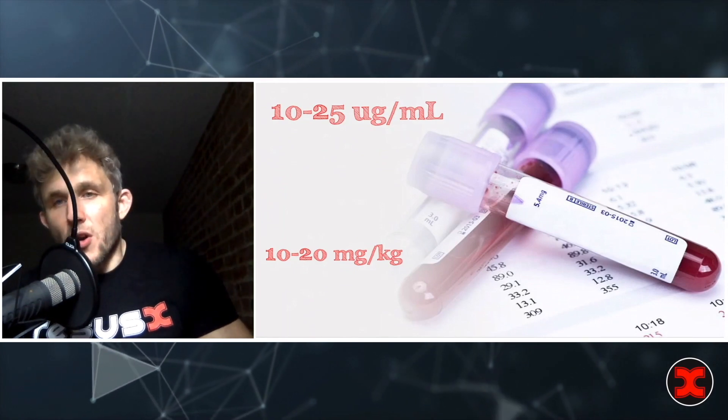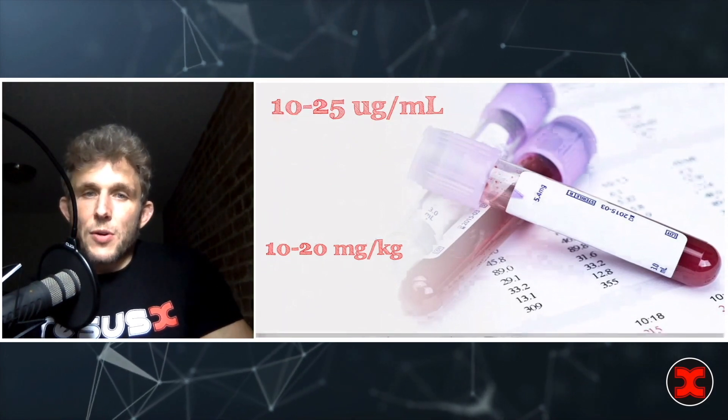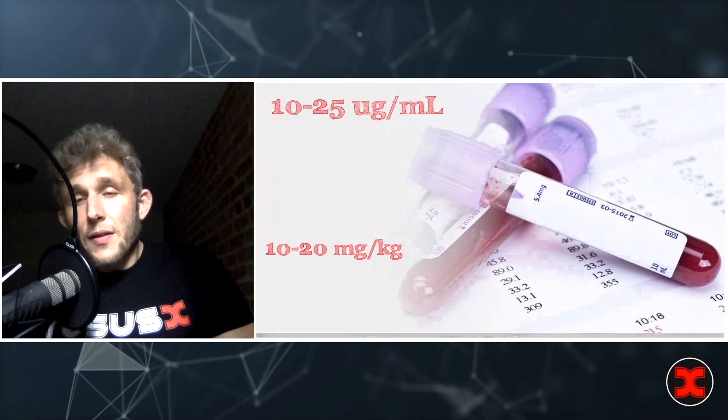The second advantage is phenobarbital's wide therapeutic window. You don't have to be precise — you just have to land somewhere between 10 and 25 mcg/mL and you'll typically have an effect. You can give a fairly large dose and know that as long as you're within this wide range, you'll get the response you want without needing very careful titration.